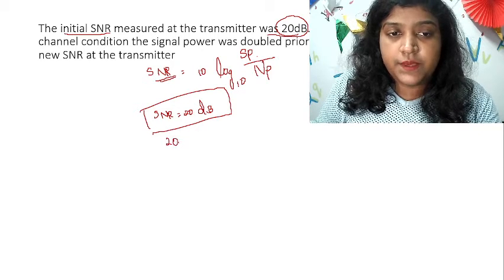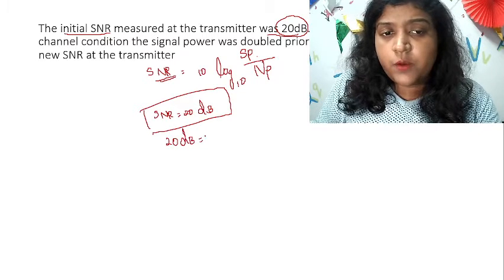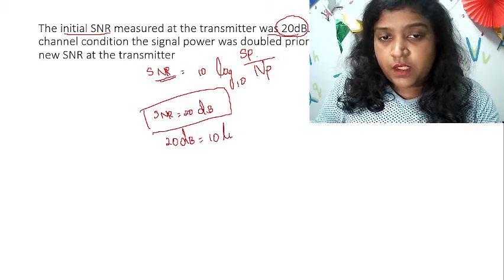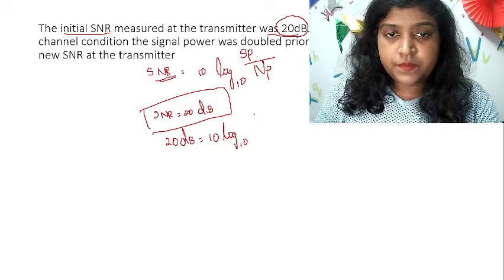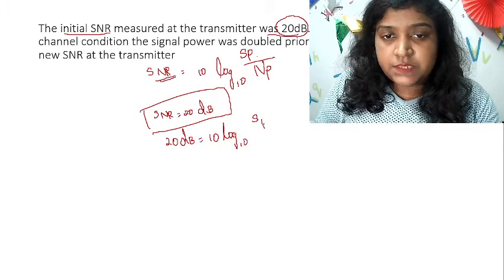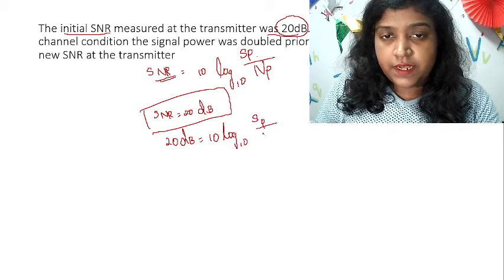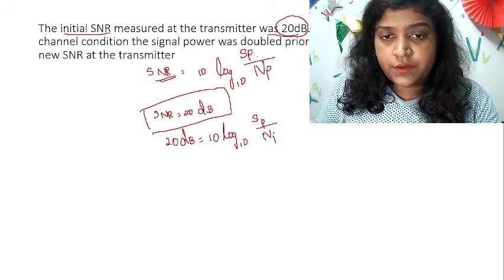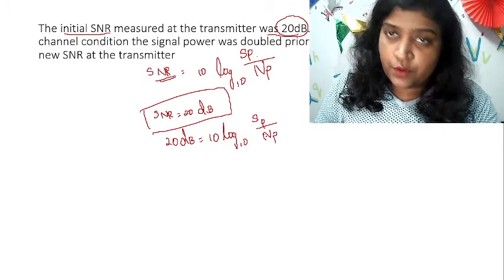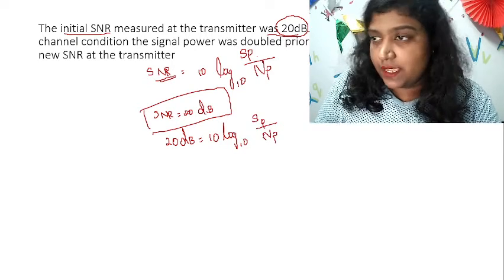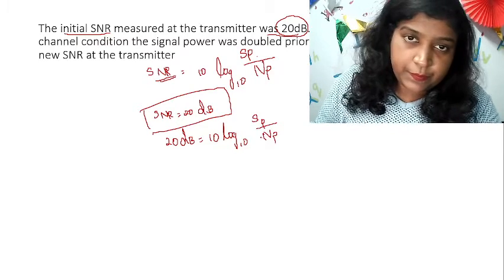20 dB is equal to 10 log base 10 of SP divided by NP. SP is signal power, N is noise power, clear?